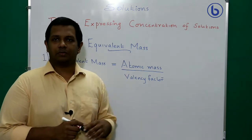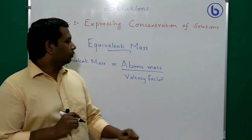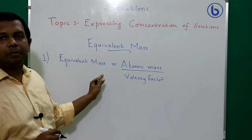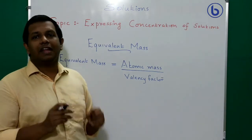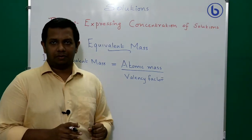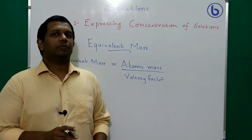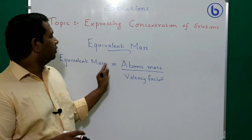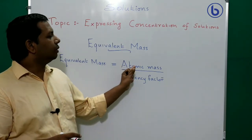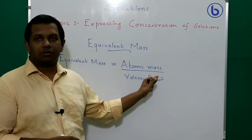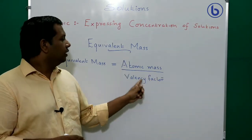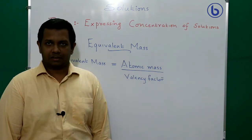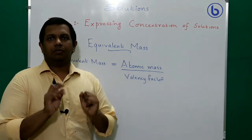First, we will discuss how to find the equivalent mass of an element. The general formula is: equivalent mass of an element = atomic mass of the element ÷ valency factor.